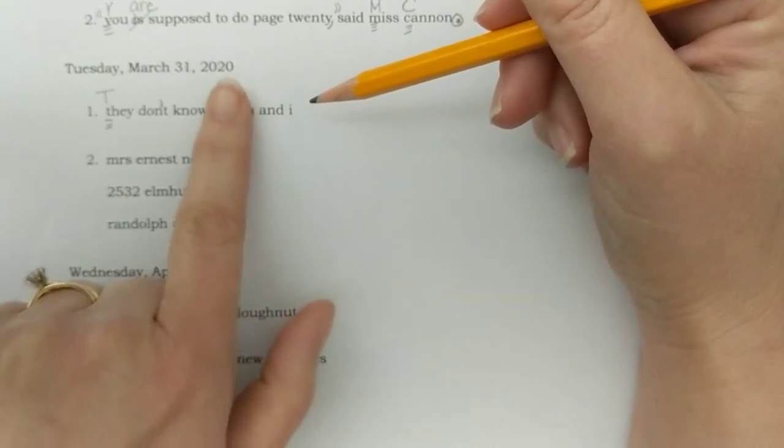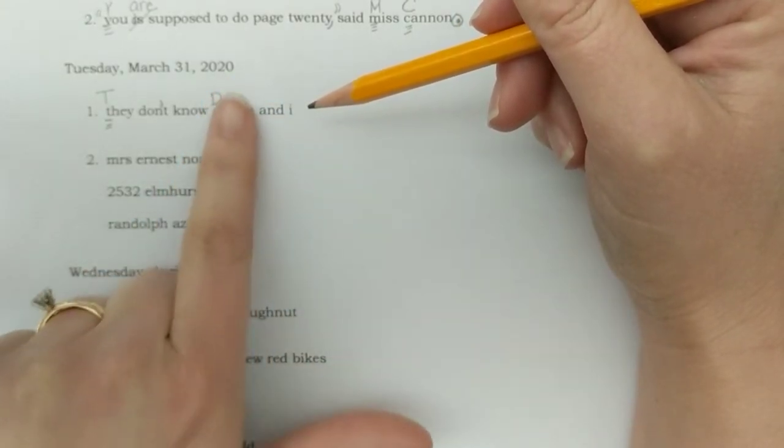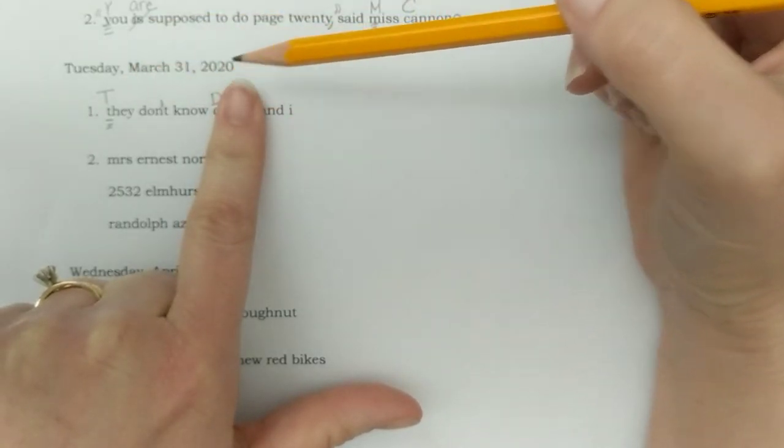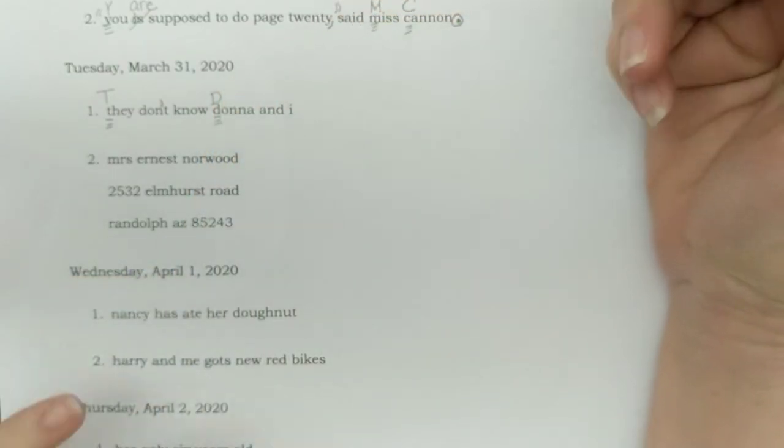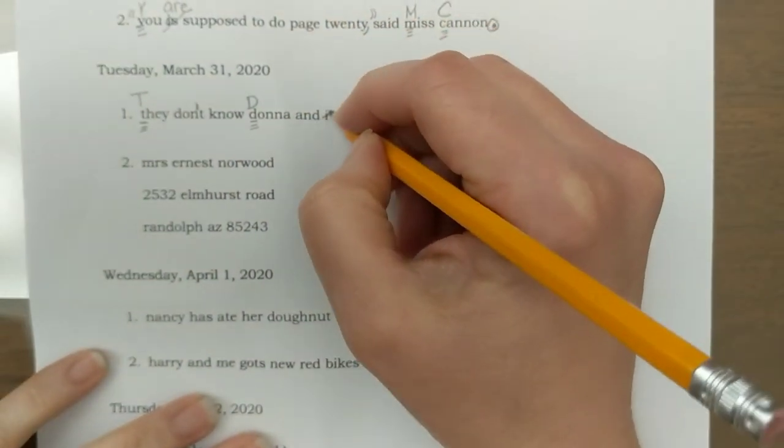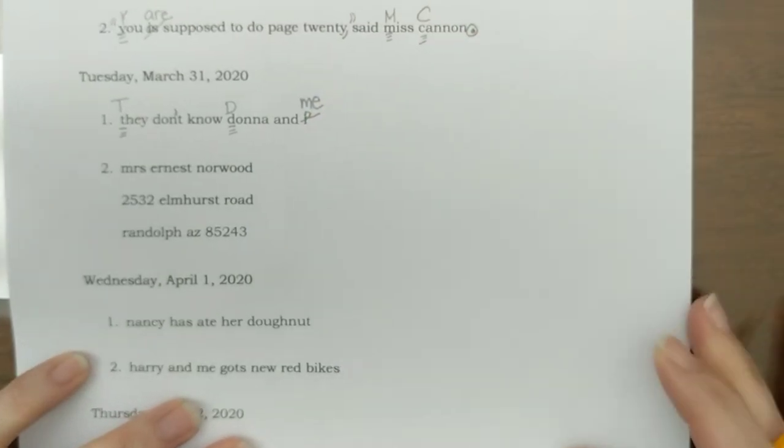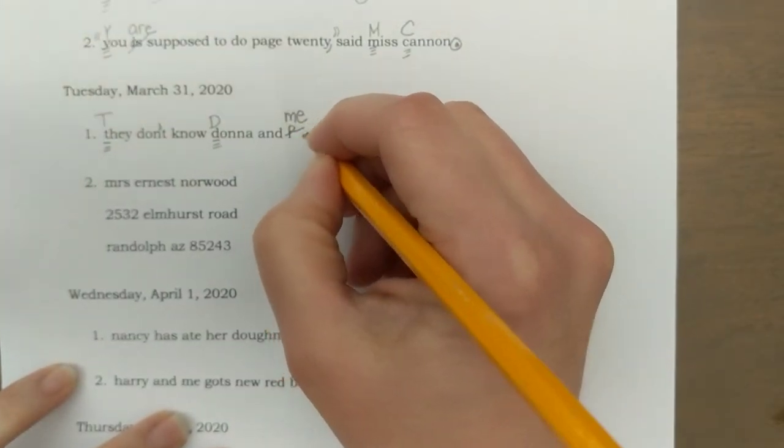Let's take out Donna from the sentence and the word and. Okay, we're not going to read those two. They don't know I or they don't know me. It should say me. Saying they don't know I does not make sense. And a period at the end.